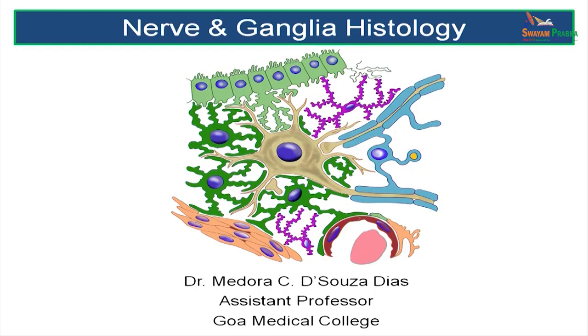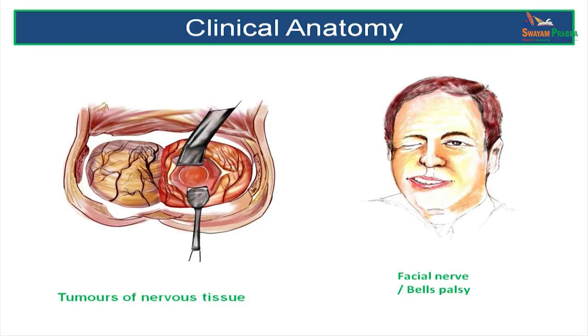I am Dr. Medora D'Souza-Dais and I am going to be presenting today's topic on Nerve and Ganglia Histology. Let's look at some of the clinical aspects of nervous tissue like tumors of the brain, or a patient with facial palsy or Bell's palsy wherein there is paralysis of half of the face.